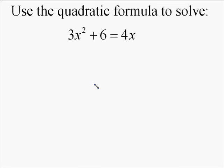The following problem is an example of how to solve a quadratic equation using the quadratic formula. So we write out the quadratic formula: negative b plus or minus the square root of b squared minus 4ac all over 2a.